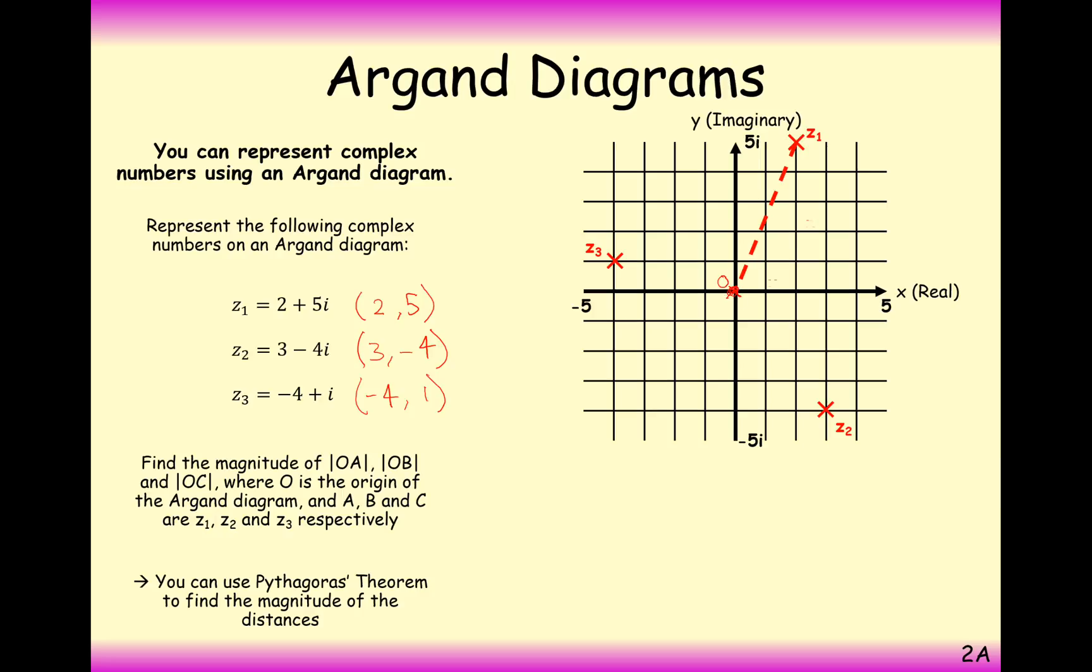You put in a little bit of Pythagoras' theorem, and you can then do 2 squared plus 5 squared, and you get the square root of 29. So that would be the magnitude of z1.